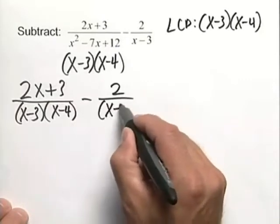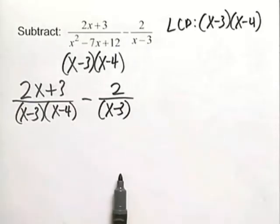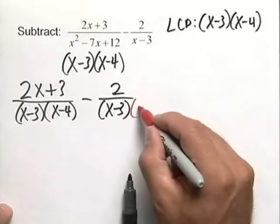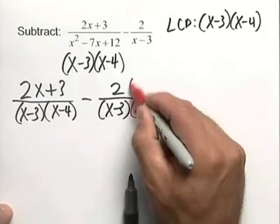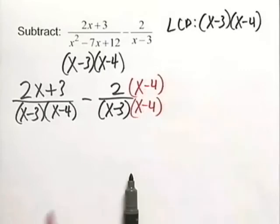2 all over x minus 3. In order to obtain our common denominator, we're going to multiply top and bottom by x minus 4.